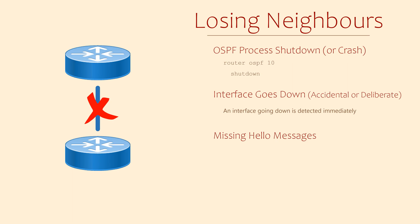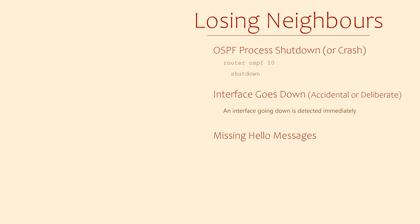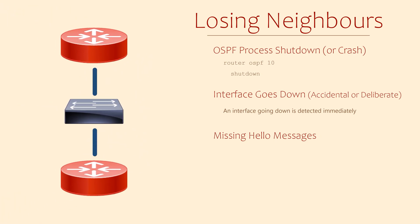What if the two routers aren't directly connected? Consider this example: these two routers are neighbours, but they connect through a switch. What happens if a link were to fail? The top router would detect this failure immediately as its interface will go down, and it will respond by tearing down its neighbour relationship. The bottom router, though, will behave differently — it won't immediately detect that the link has failed, as the link between itself and the switch is still up. It would be the same if the top router died or rebooted; the bottom router wouldn't immediately know that something is wrong.